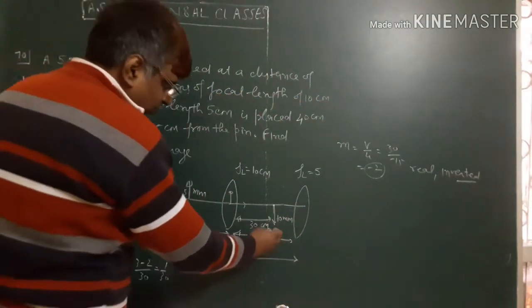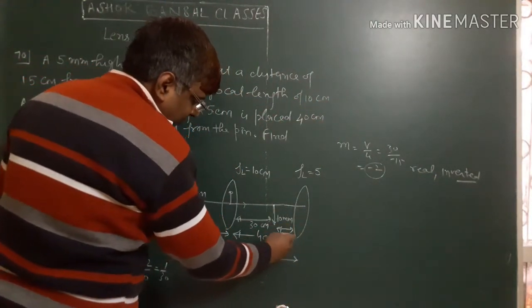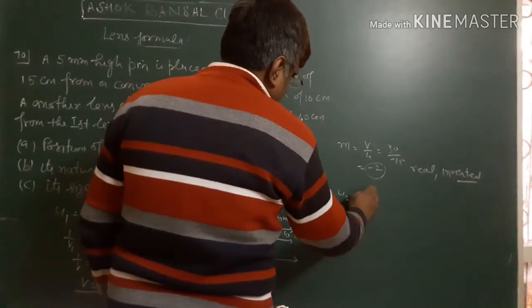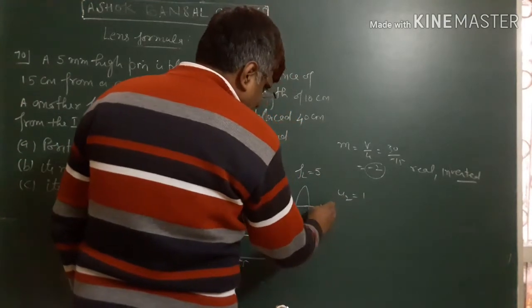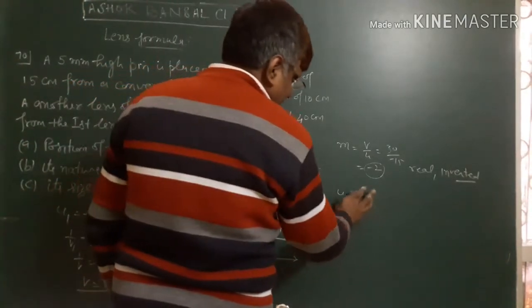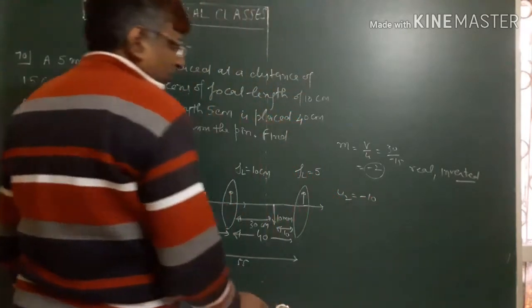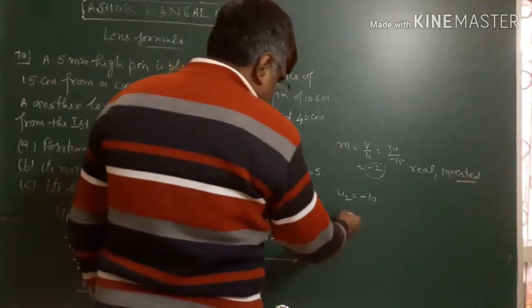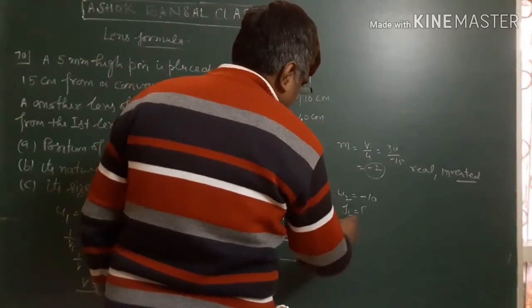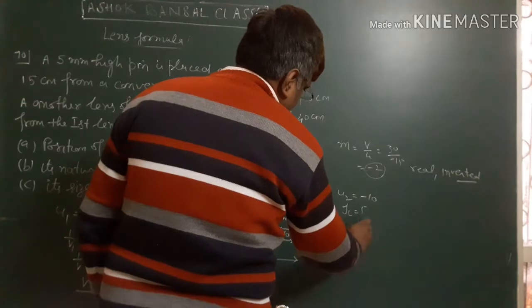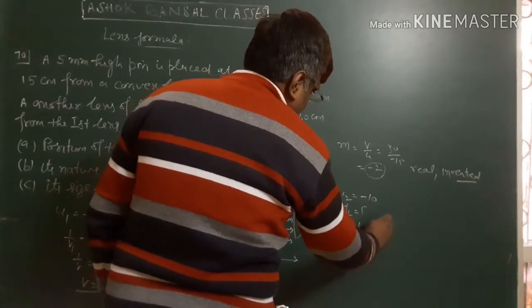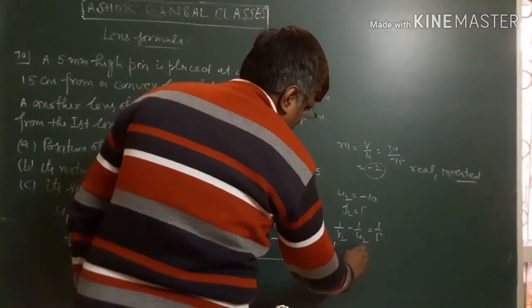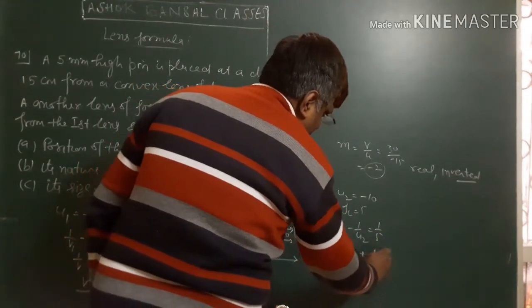Now this distance is 40 minus 30 equals 10cm. So u2 equals -10cm. The focal length f2 equals 5cm. Using 1/v2 minus 1/u2 equals 1/f2, we get 1/v2 equals 1/5 plus 1/10.